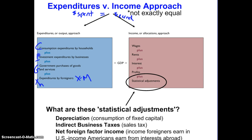The income approach, instead, adds up all the forms of income that people earn. We have wages, which make up most of the income. Wages are the income paid to people who sell their labor — most people, like myself, or somebody who drives a truck, or somebody who flies an airplane, or somebody who is a lawyer — those people are selling their labor for the most part.